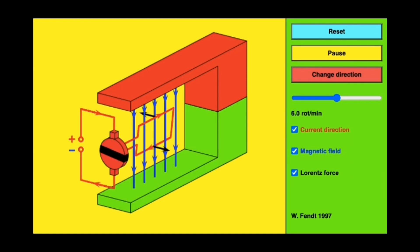The Walter Fentz simulation of a direct current motor shows us how the motor effect is used to convert electrical energy into mechanical energy.